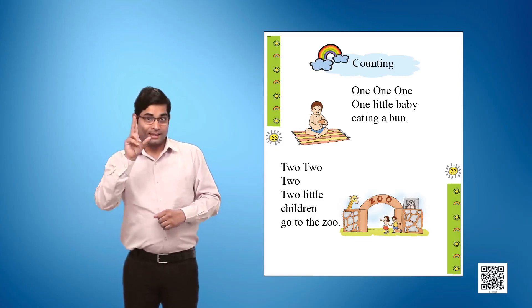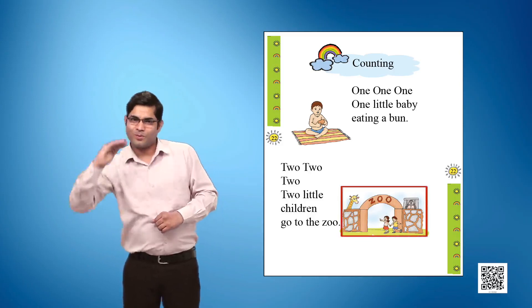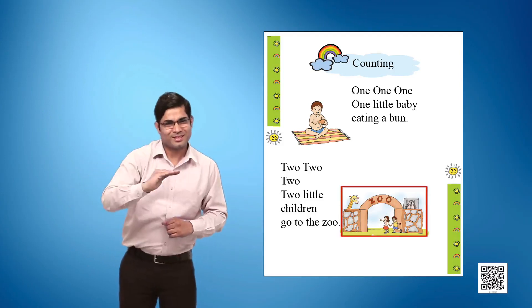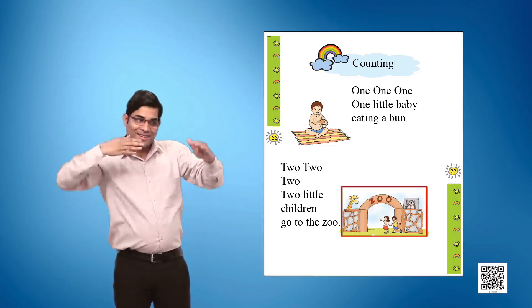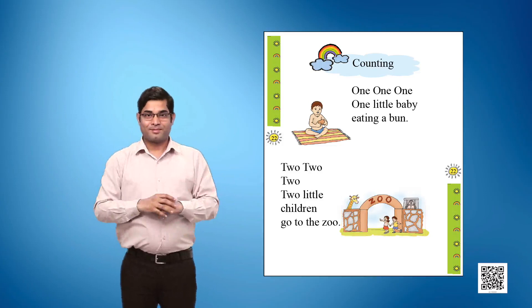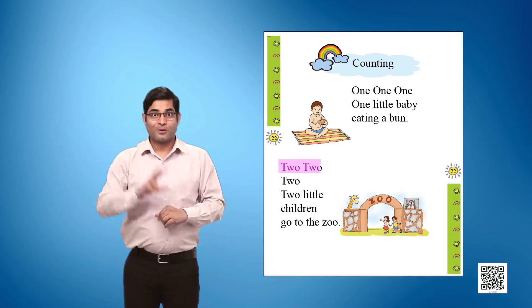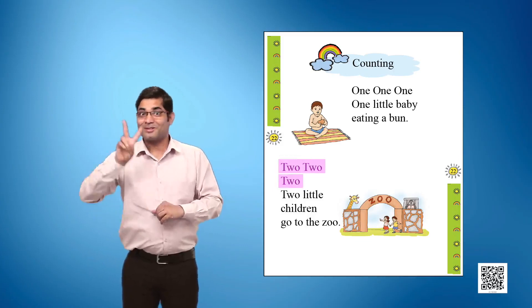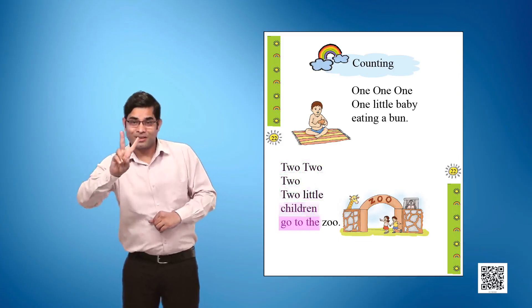Picture 2 shows a boy and a girl entering the gate of the zoo. Text given: Two Two Two, Two little children go to the zoo.